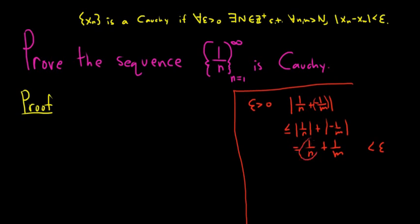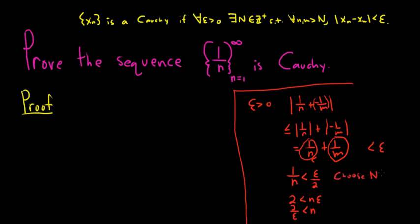If we can make each of these less than epsilon over 2, then we're good. So: 1 over n less than epsilon over 2. We can cross multiply, and that will be true when n is bigger than 2 over epsilon. So if little n is bigger than 2 over epsilon, this will be less than epsilon over 2. So we'll choose big N bigger than 2 over epsilon in the proof, and using this strategy everything should work out.